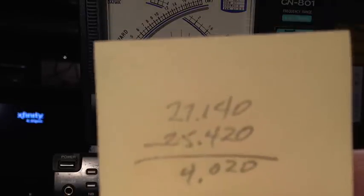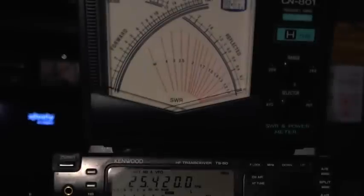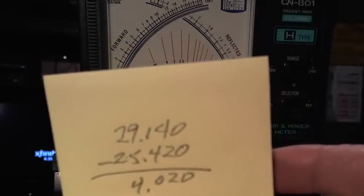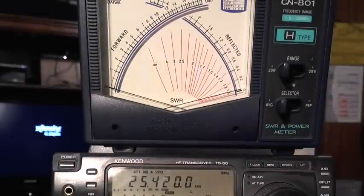Right there, you'll see. That's what, oops, my mistake. 29140. I'm full of mistakes. 29140 minus 25420. That's where we are right now. 25420.